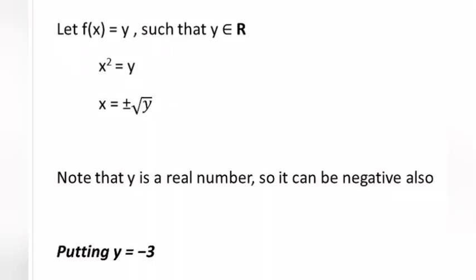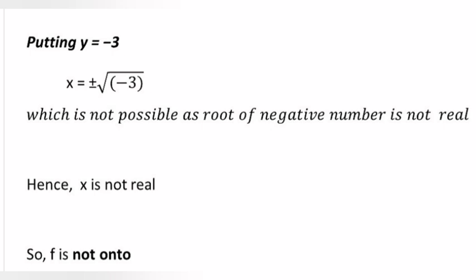So x² = y, giving x = ±√y. Note that y is a real number, so it can be negative. Putting y = −3, x = ±√(−3), which is not possible as the square root of a negative number is not real. Hence x is not real, so f is not onto.